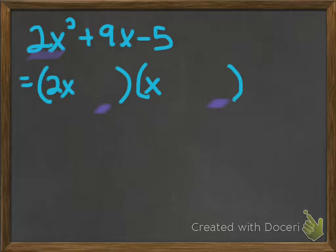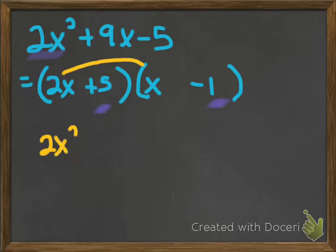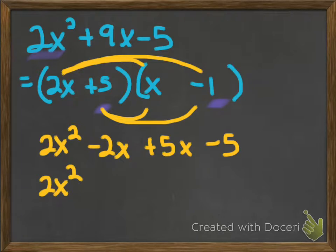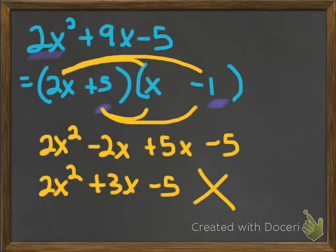I know they're going to have to multiply to negative 5. Let's try a positive 5 and a negative 1. I'm totally just guessing here; that's what trial and error is about. How do we figure out if that's right or wrong? We FOIL. 2x times x gives 2x squared. 2x times negative 1 is negative 2x. 5 times x is positive 5x. 5 times negative 1 is negative 5. When those terms combined, I got 2x squared plus 3x minus 5. This is not the original, so this definitely did not work.